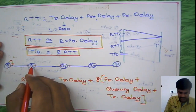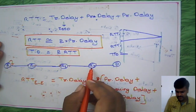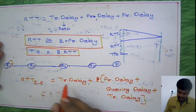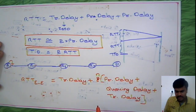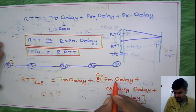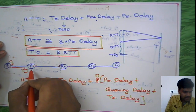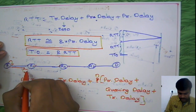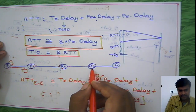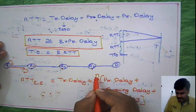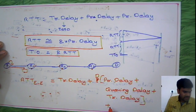At each router there is some propagation delay, some queuing delay, and some transmission delay. In this example we have three routers, so we must consider three routers' worth of delay. In the general case we have N routers, so we consider N times the delay at each router — covering propagation delay, queuing delay, and transmission delay per router.